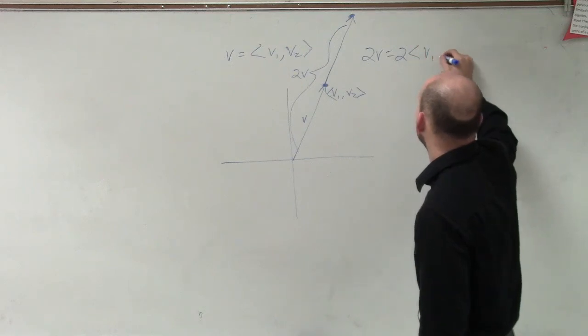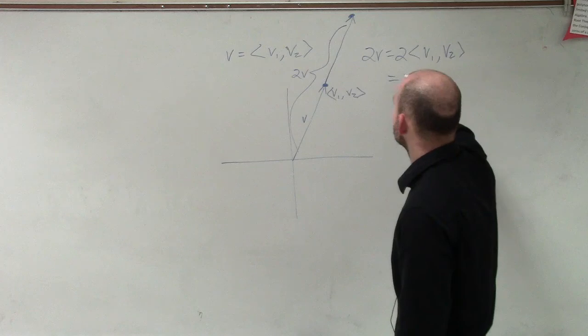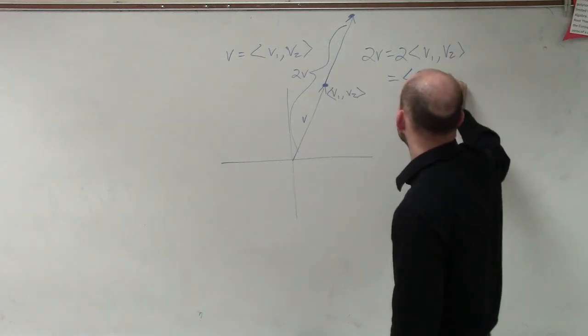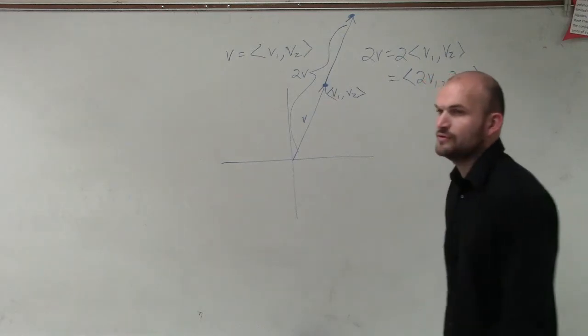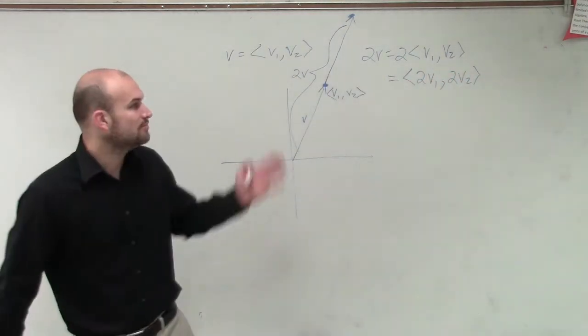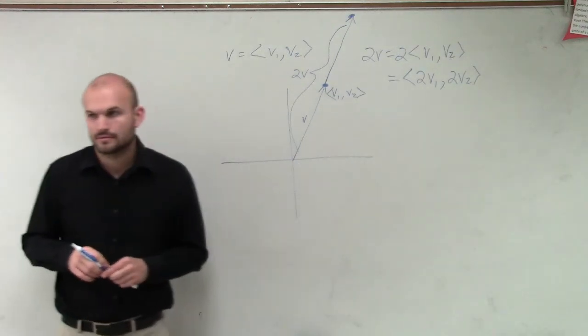So to find that coordinate point of 2V, that's going to equal 2 times V1 comma V2, which is the same thing as just multiplying your 2 times V1 and then 2 times V2. So if you have a scalar, you're going to multiply that scalar to each of your coordinate points inside.